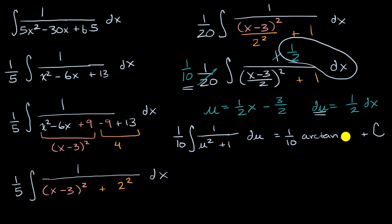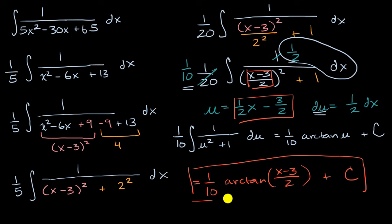Now we just want to do the reverse substitution. We know that u is equal to x minus three over two. This is going to be equal to one-tenth times the arctangent of x minus three over two, and then plus c. And we are done.